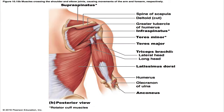The teres minor is a small, elongated rotator cuff muscle that lies inferior to the infraspinatus and sometimes may be inseparable from it. Its origin is the lateral border of the dorsal scapular surface, and its insertion is the greater tubercle of the humerus, inferior to the infraspinatus insertion. Its actions are the same as the infraspinatus — rotating the arm laterally. It is innervated by the axillary nerve.